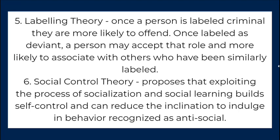Once labeled as deviant, a person may accept that role and is more likely to associate with others who have been similarly labeled. 6. Social control theory — proposes that exploiting the process of socialization and social learning builds self-control and can reduce the inclination to indulge in antisocial behavior.